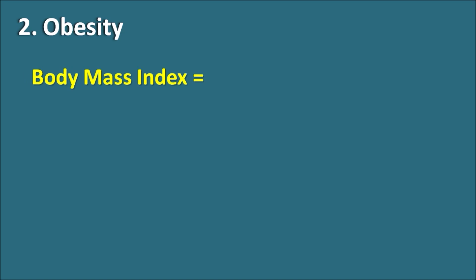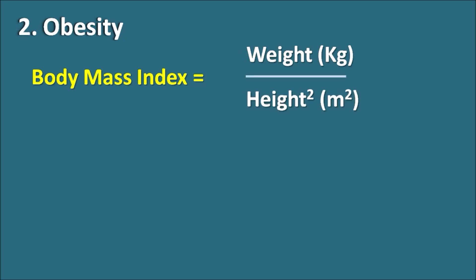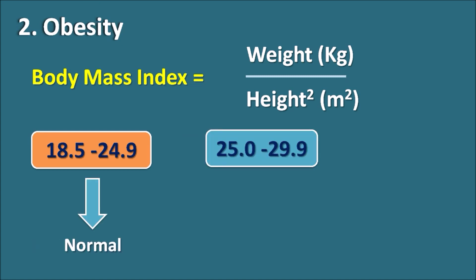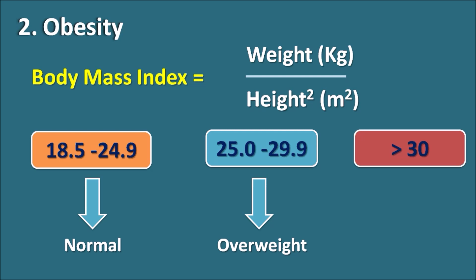The second risk factor is obesity. Obesity is measured by body mass index (BMI), which is given as weight in kg divided by the square of height in meters. A BMI between 18.5 and 24.9 is normal; 25.0 to 29.9 is overweight; and greater than 30 is obese. The risk of atherosclerosis increases with high BMI, and patients who are overweight or obese will have more risk. It is always better to maintain BMI less than 25 to prevent atherosclerosis.